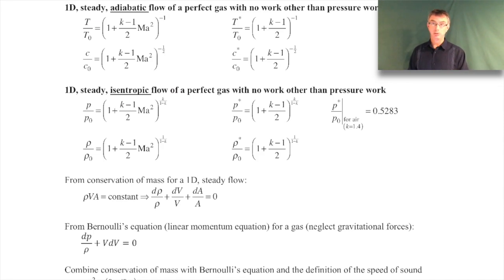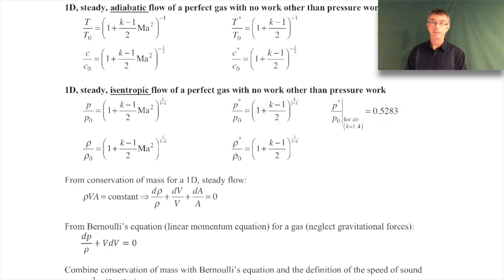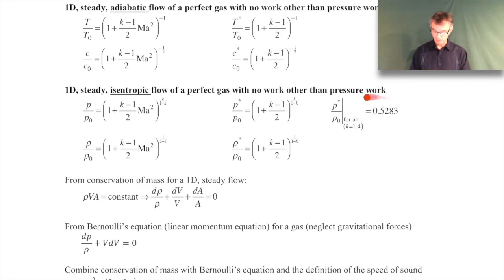Since we'll use it a lot going forward, I'll note the sonic pressure ratio for air. Air has a specific heat ratio k = 1.4, so P*/P₀, when you plug k = 1.4 into the expression, comes out to be about one half. That's a number we're going to use quite a bit in the next few lectures.